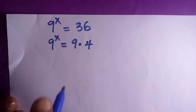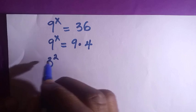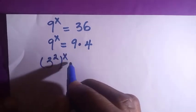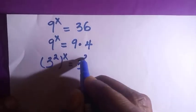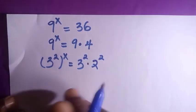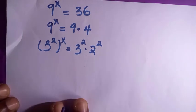If this is 3 raised to the power of 2 raised to the power of x equals to 3 raised to power 2 times 2 raised to the power of 2.